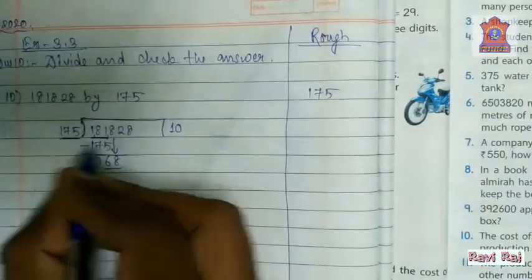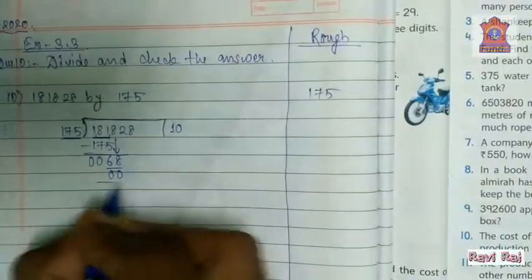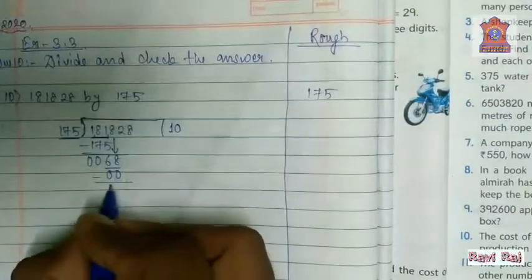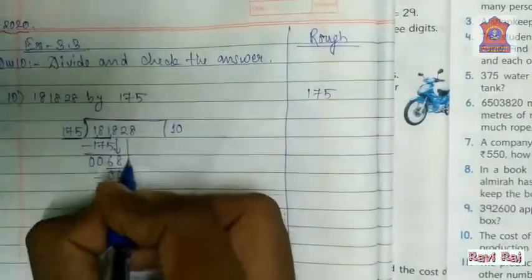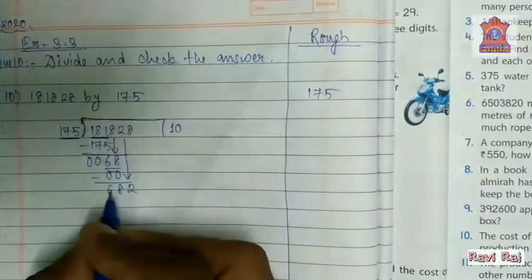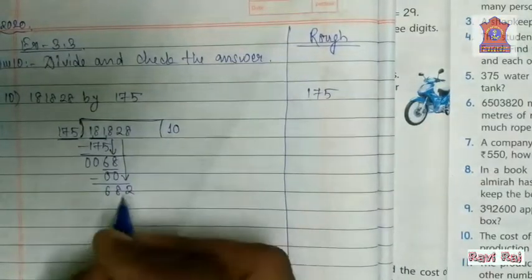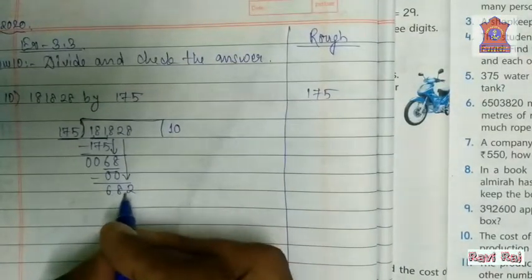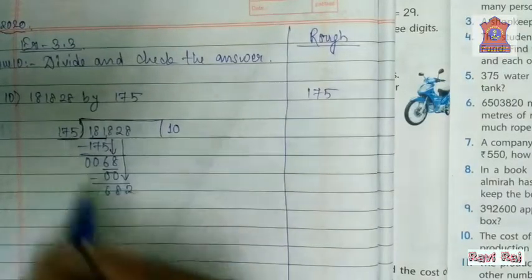So what we can do is take 0. 175 into 0 equals to 0. Now subtract it. We have got 68. What comes down next? 2. The value is 682. Now we need to check if 682 is in the 175 table or not.